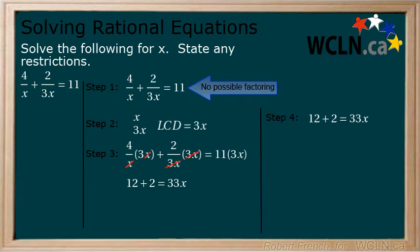Step 4. Solve for the variable. 12 plus 2 equals 14. Then divide both sides by 33 to get x equals 14 over 33.